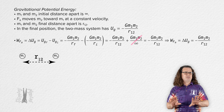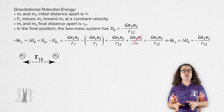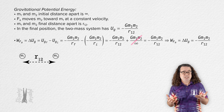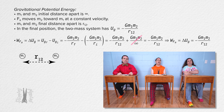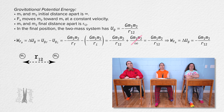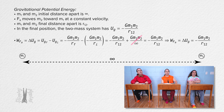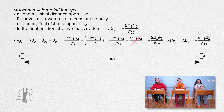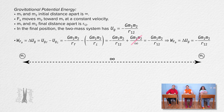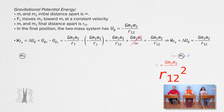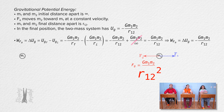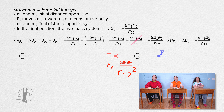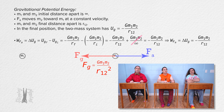Student: But how would a constant force keep mass 2 moving at a constant velocity? Teacher: It does not say the external force is constant — it says the velocity of mass 2 is constant. As the two masses get closer to one another, the external force would need to increase to keep mass 2 moving at a constant velocity. Student: Sure, that makes sense.